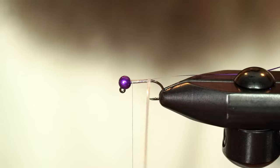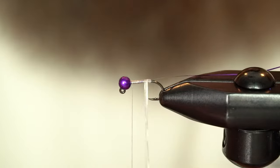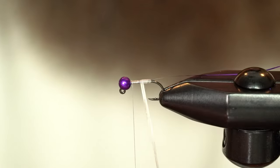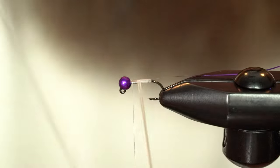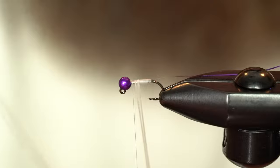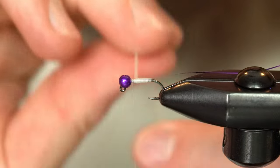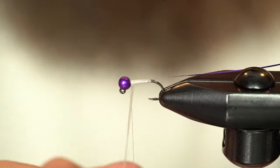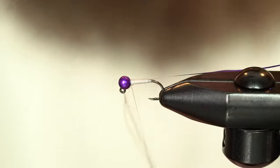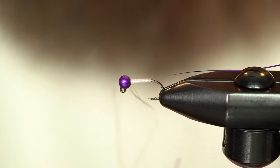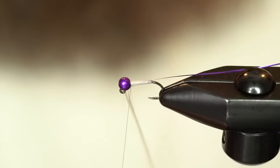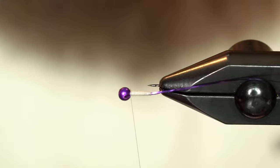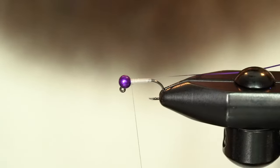I'm going to make nice even wraps. Try to keep them as close together as possible. And work my way up the shank. Get right behind the bead. And I'm going to secure that with a wrap in front and a wrap behind. Then I can snip out Flashaboo. So a nice little taper.